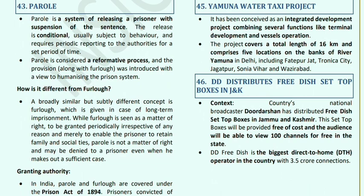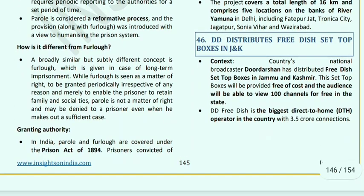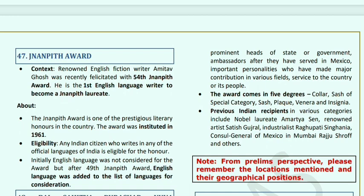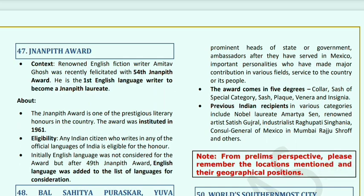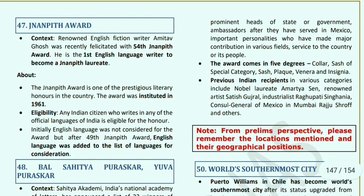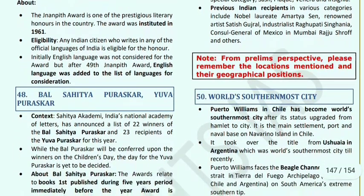DD Free Dish distributes free set-top boxes in Jammu and Kashmir: India's national broadcaster Doordarshan distributed free dish set-top boxes in Jammu and Kashmir free of cost, enabling audiences to watch 100 channels for free. DD Free Dish is the biggest direct-to-home operator with 3.5 crore connections. Jnanpith Award: the 54th Jnanpith Award was given to Amitav Ghosh, who is the first English language writer to receive the Jnanpith laureate. It is a prestigious literary honor established in 1961. Initially English language was not considered, but after the 49th Jnanpith Award, English was also included.